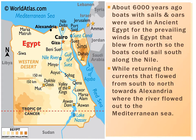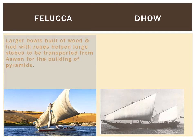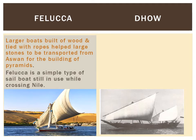The river currents flow into the Mediterranean Sea. Here you can see two kinds of boats: the felukha and the dhau. The felukha is the larger boat, built from wood tied together with ropes. Huge stones were transported in felukhas from their original quarry to where the pyramids were built. The felukha is also a simple type of sailboat still in use today for crossing the River Nile.